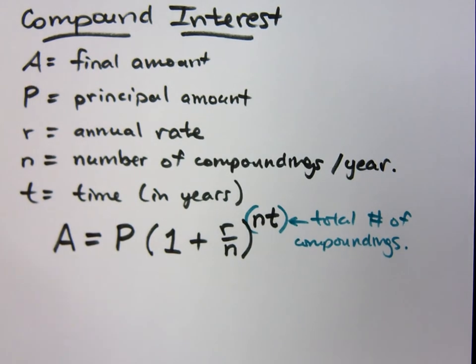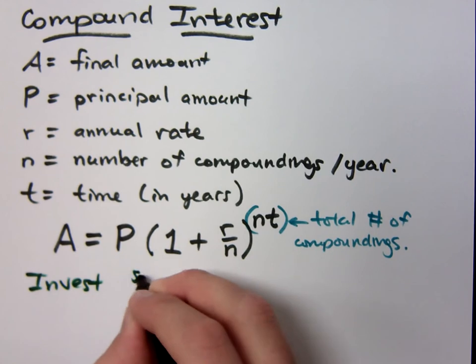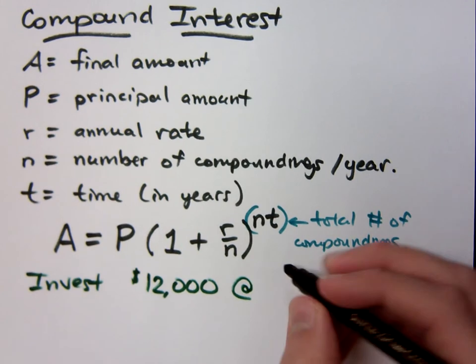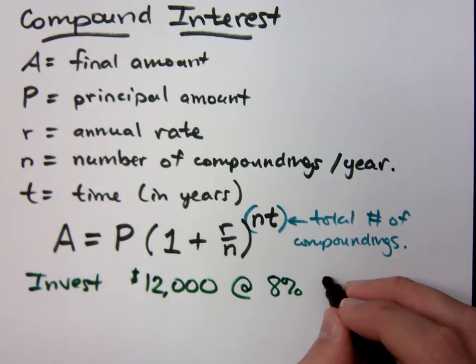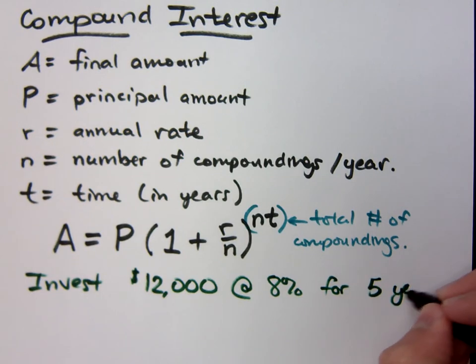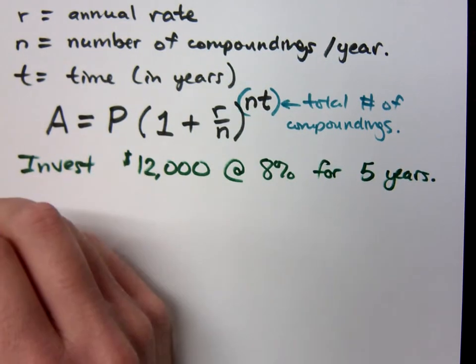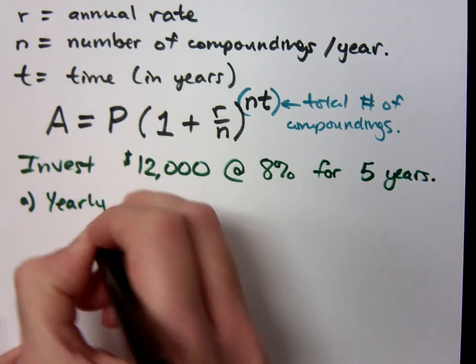Let me just give you an example of this. Suppose you invest $12,000 at an account that earns 8%. Let's do this for five years. Now when I say in five years, I'm going to look at some different examples here. First, let's see what happens if you do yearly compounding.